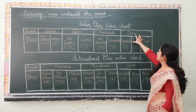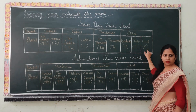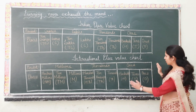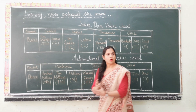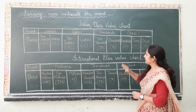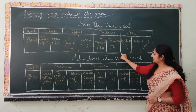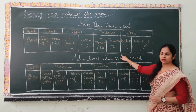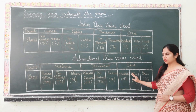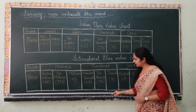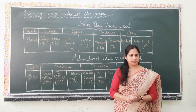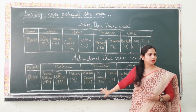The second point of difference: in the Indian place value chart, the ones period has 3 places and the remaining periods have 2 places each. But in the international place value chart, all periods have 3 places. Therefore, in the international system, you put commas before every 3 digits, whereas in the Indian system you put the first comma after 3 digits and then after every 2 digits.